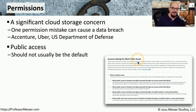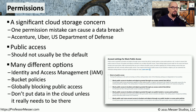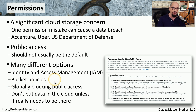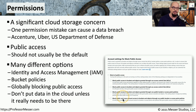That obviously is not a best practice, and many cloud-based providers have changed their defaults so that public access is not the default. These are the account settings for public access for data on the Amazon network, and you can configure options to block all public access or modify how the data is provided to others. There are many different ways to manage this access — one is through identity and access management, so that we can assign user account information and associate these users to the data they're accessing. We can also set policies on the buckets themselves, and globally block public access. The goal is to keep the data safe.